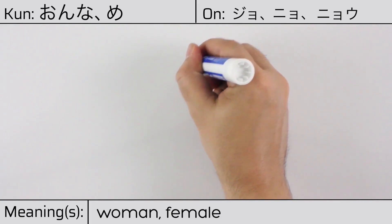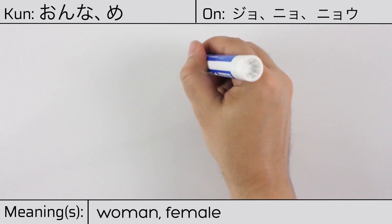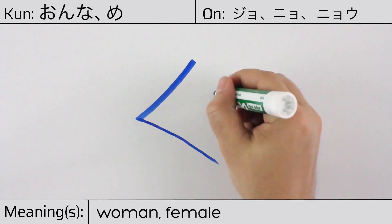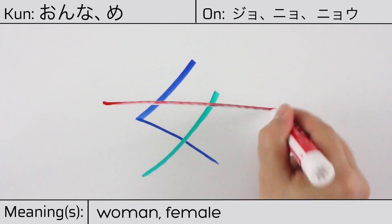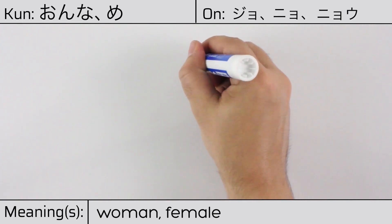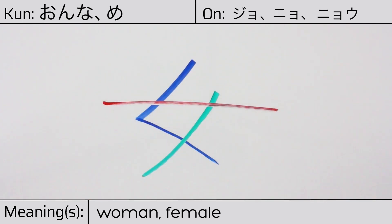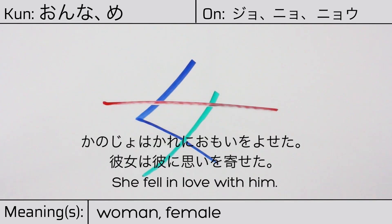This character is made up of the following radicals or parts: katakana ku, ichi or kanji number one, and katakana no. This kanji was originally drawn with two hollows in the middle representing breasts, similar to the character 母 or mother. Now only one remains, and the character looks similar to a woman kneeling or standing. Our example sentence is: 彼女は彼に思いを寄せた — She fell in love with him.